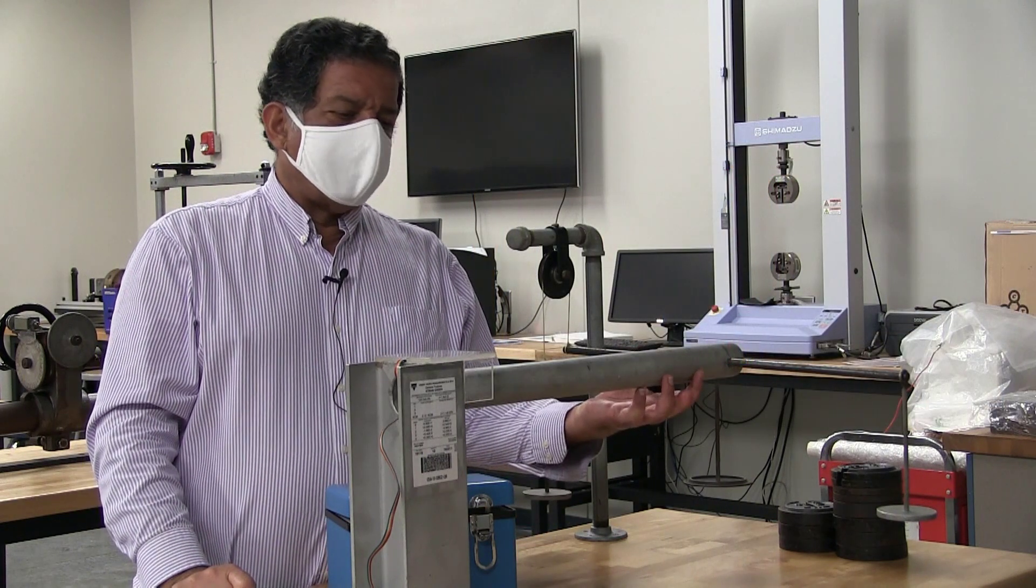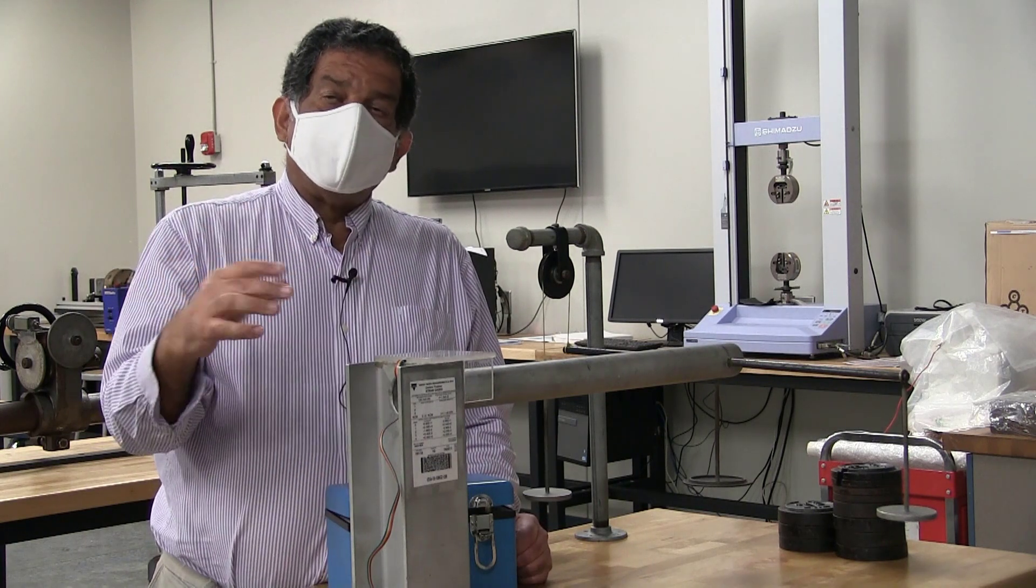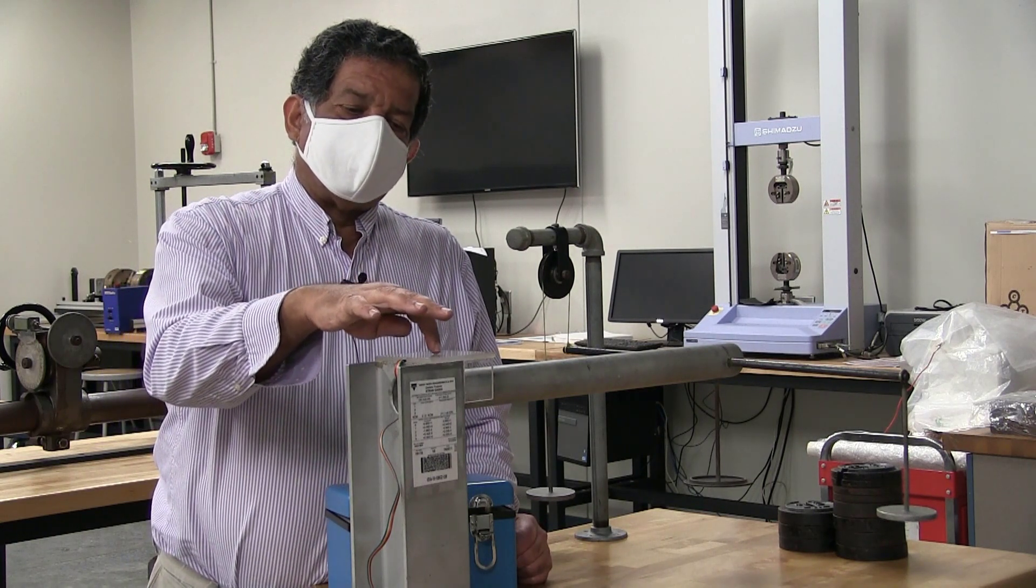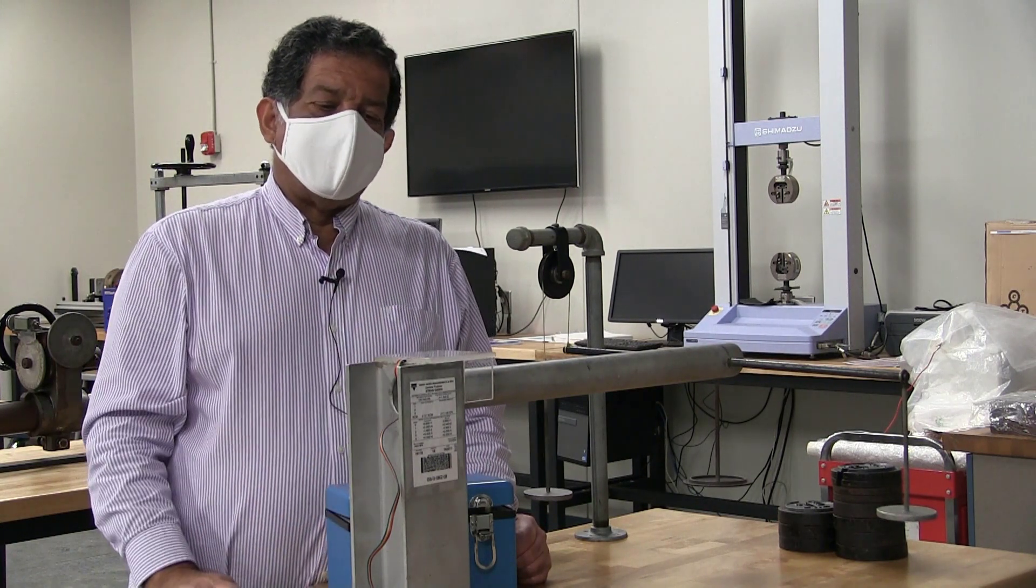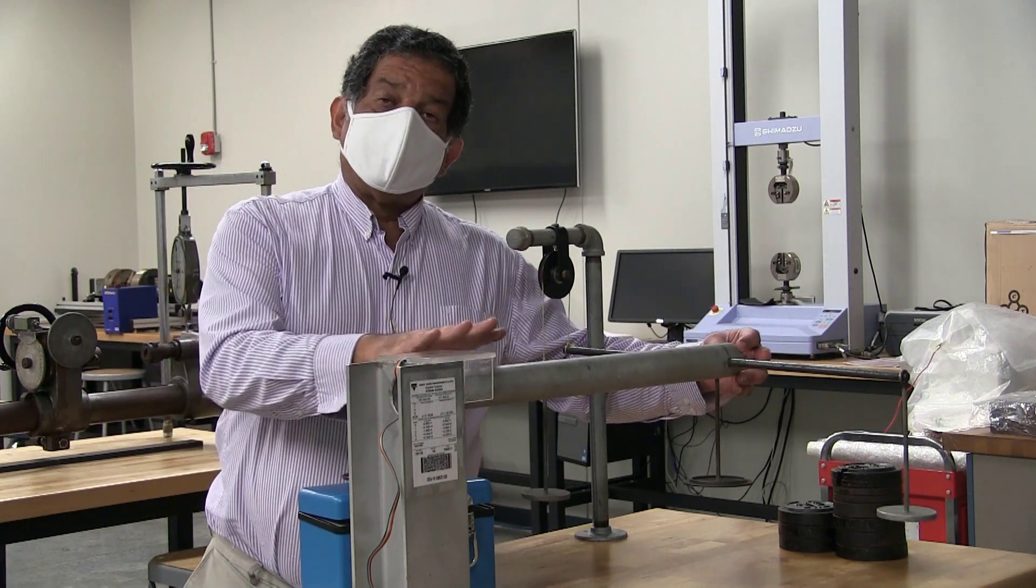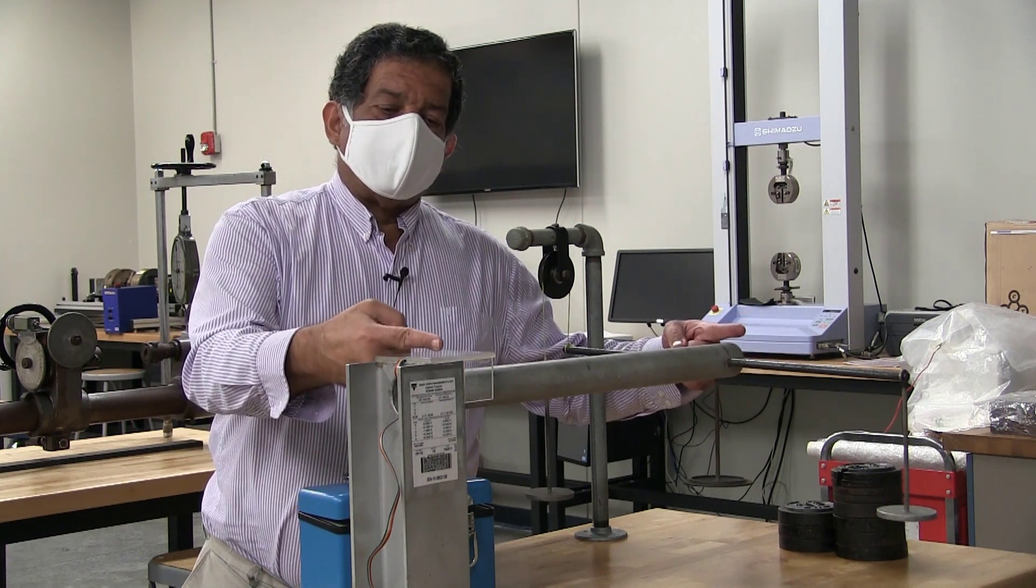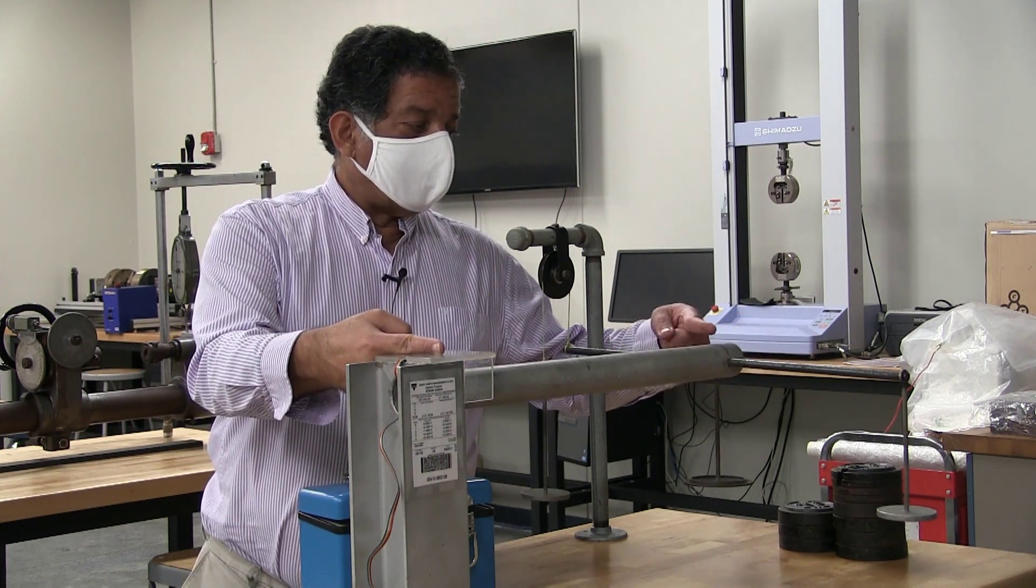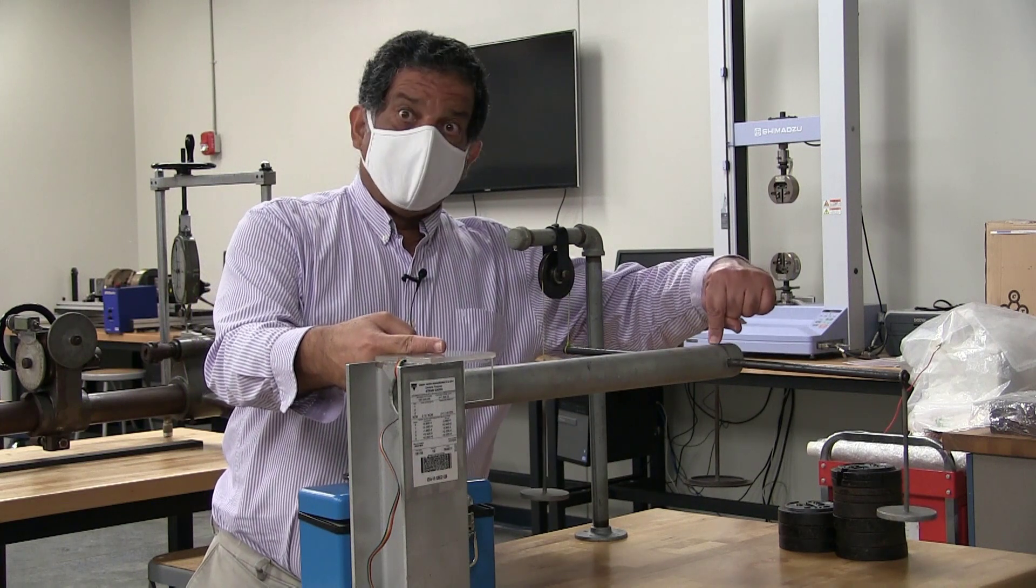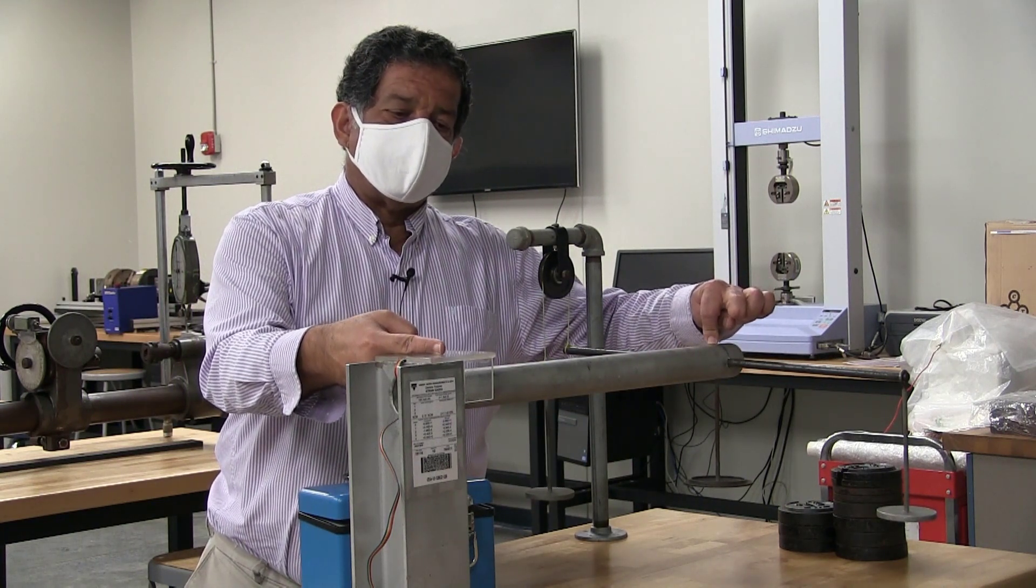As we load this thing up in combined tension and torsion, you will experimentally obtain the values of strain at the location of the rosette, and then you will use the dimensions for the tube. The important dimensions are the distance from the center of the rosette to the point at which the load is being applied, not the end of the tube, but the point where the load is being applied to the center of the rosette, so that length we're going to be giving you.